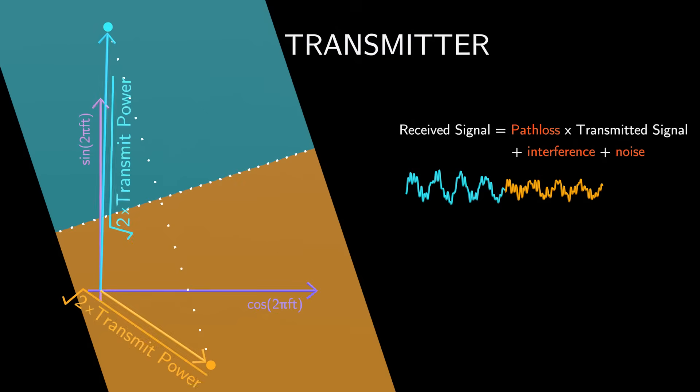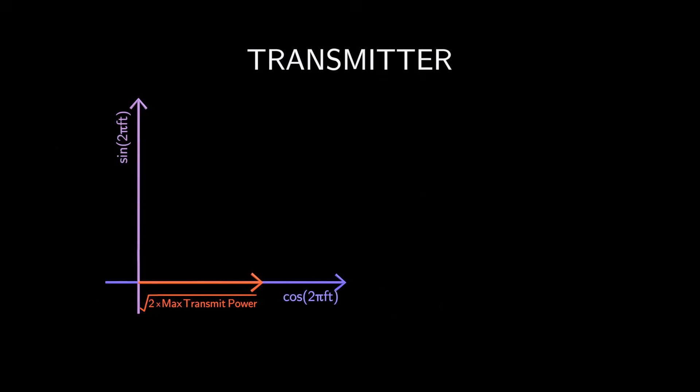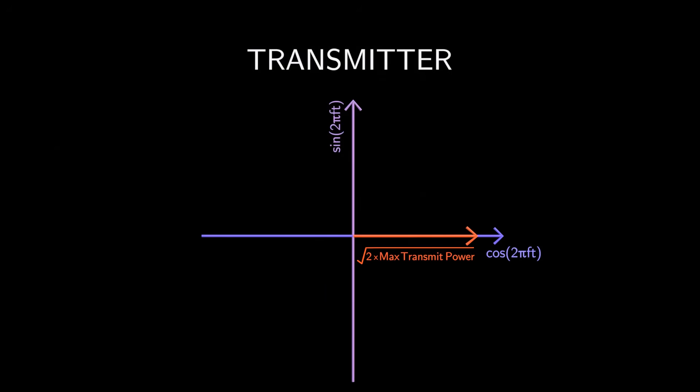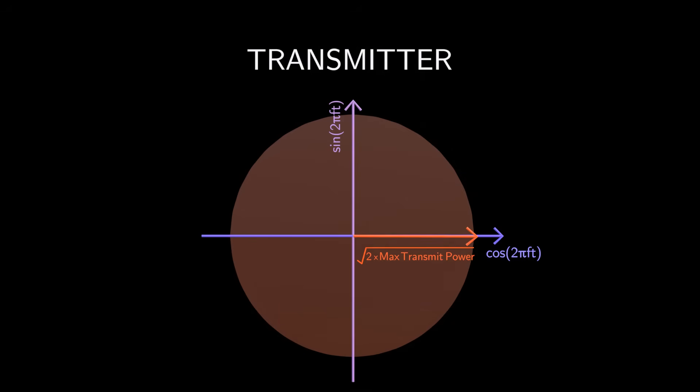The length of the vector determines the transmit power. Since there's a maximum limit to the transmit power, all our constellation points have to fit within this circle, defined by the maximum available transmit power.